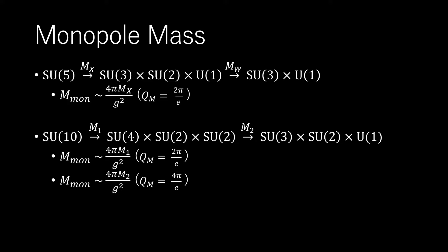For example, an SU-5 model with SU-5 goes to SU-3 cross SU-2 cross U-1, and then goes to SU-3 cross U-1 has a monopole with Qm equals 2π over E, and mass M is approximately equal to 4π mx over G squared, where G is the SU-5 gauge coupling. For a unification scale of 10 to the 16th GeV, these monopoles would have a mass approximately equal to 10 to the 17th to 18th GeV.